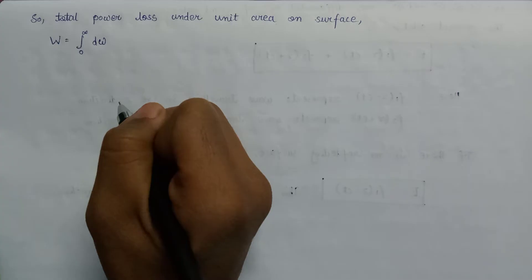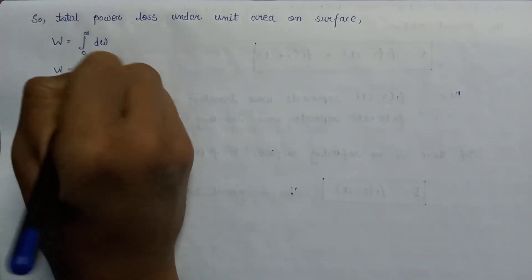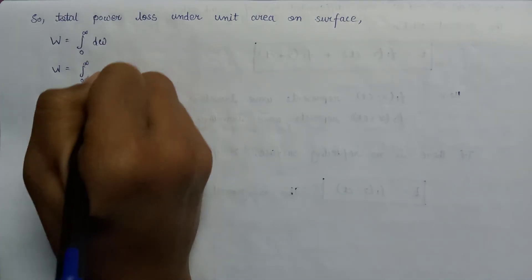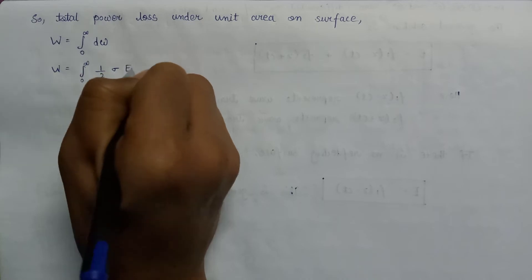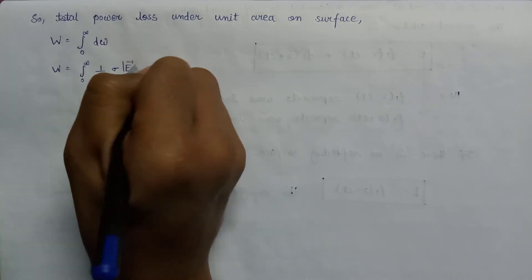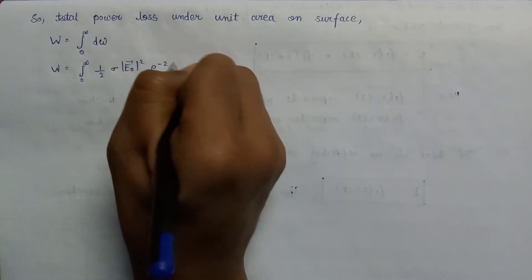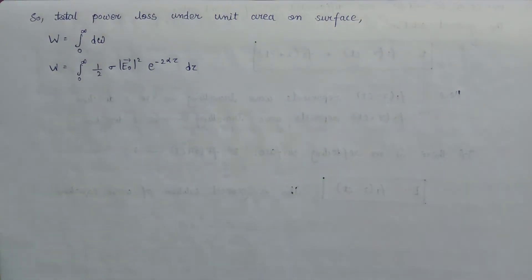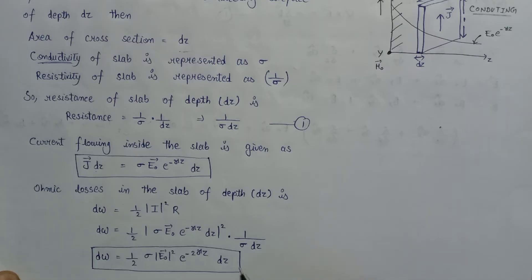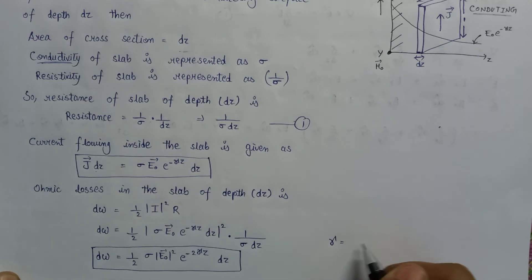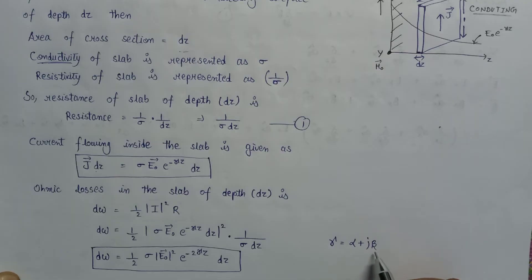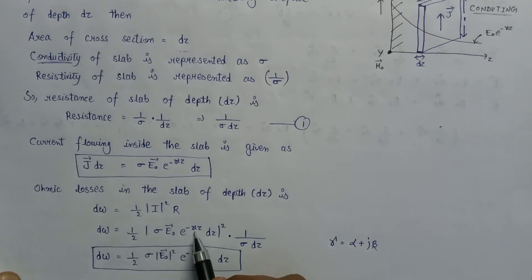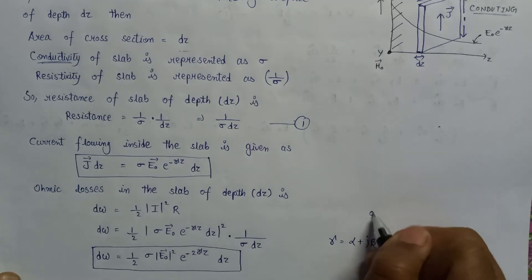There is a correction here: since we know that the propagation constant gamma equals alpha plus j beta, if we write alpha plus j beta in place of this propagation constant, then dw becomes one-half times the mod squared of E0 times e to the power minus (alpha plus j beta) z times dz, all multiplied by 1 over sigma dz.